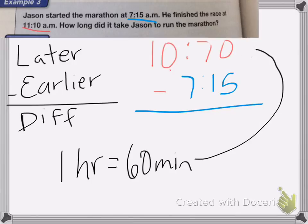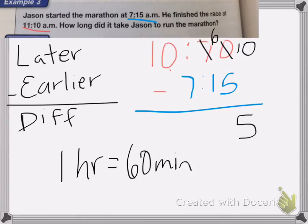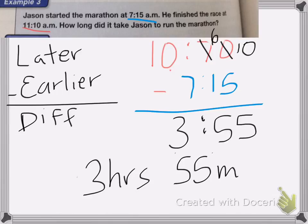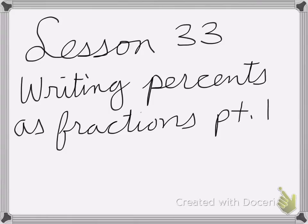I'm going to do 70 minus 15. That becomes a 10. 10 minus 5 is 5. This becomes a 6. 6 minus 1 is 5. So we have 55 minutes. And then 10 minus 7 is 3, so it took him 3 hours and 55 minutes to run the marathon. The biggest thing to remember is when you borrow from your hours, you have to add 60 minutes to your minutes column. And that's it. Thanks for watching.